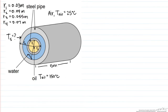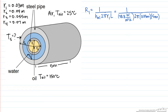Our first resistance is the convective heat transfer resistance due to the oil in the middle. That is 1 over the heat transfer coefficient times 2πR₁ times the length of the pipe. We end up with R₁ equal to 0.027 Kelvin per watt.